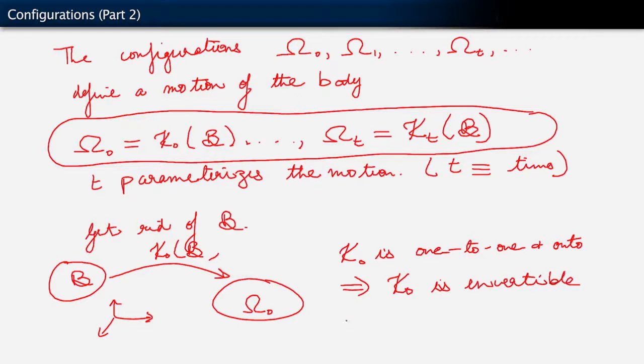So the body B can always be described as kappa naught inverse of omega naught. And any particle that we want to refer to on the body can always be represented as kappa naught inverse of that position x. And I'm doing this only with that configuration omega naught.